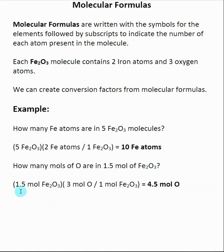So if I say I have 1.5 moles of Fe2O3, I want to figure out how many moles of oxygen are inside of there. I use this same ratio. The ratio that I get from the molecular formula says that for every one mole of Fe2O3, I get three moles of oxygen. That's what this subscript three means.